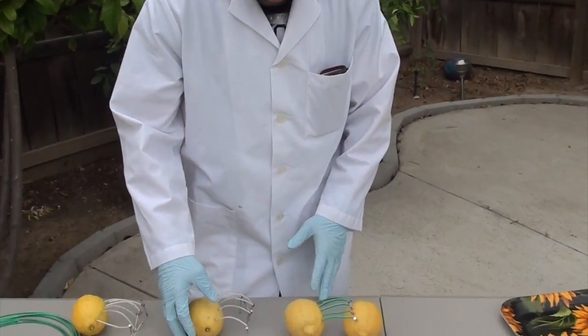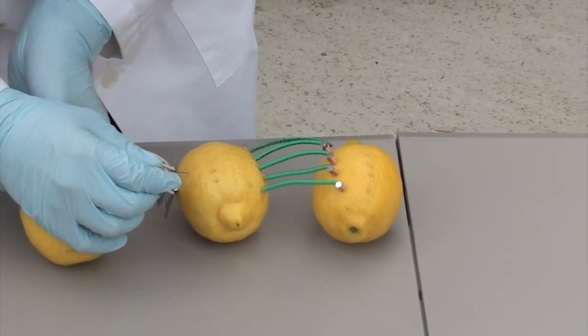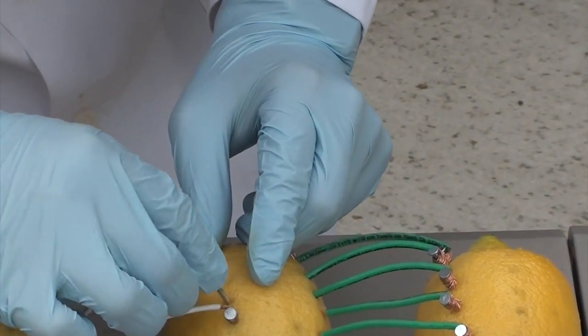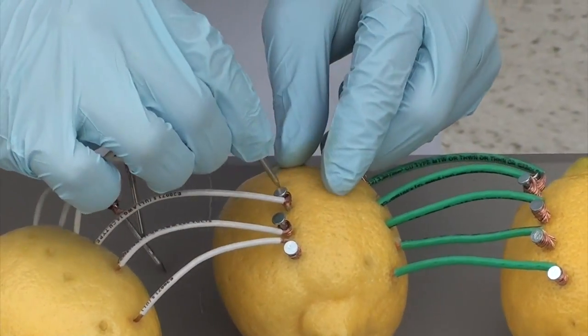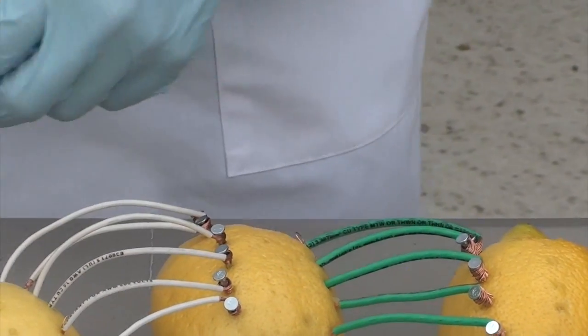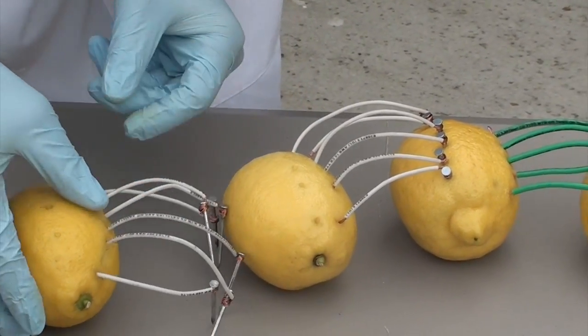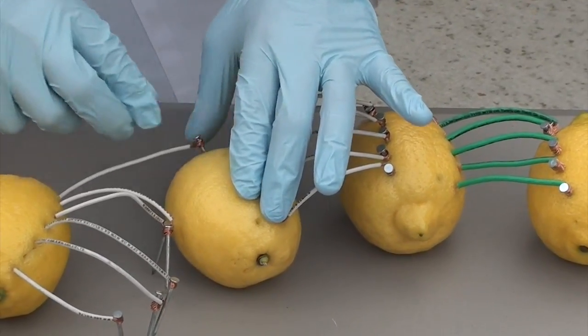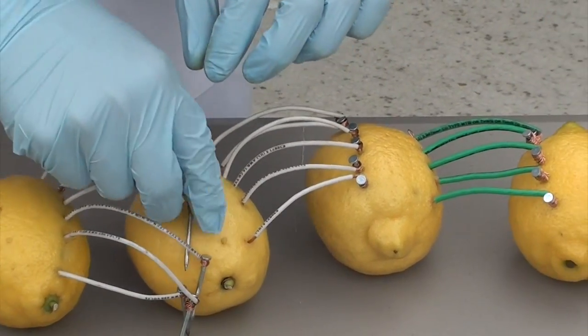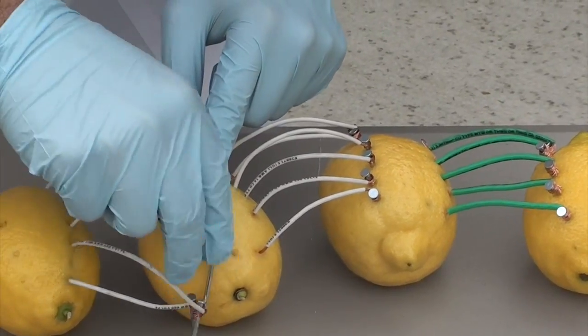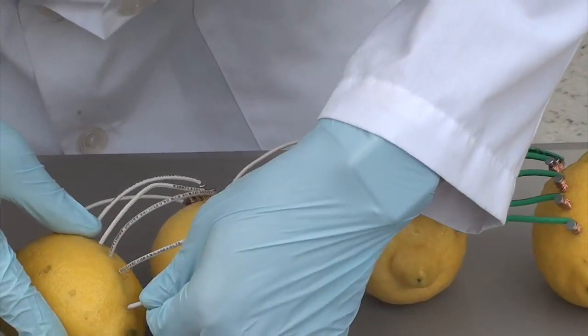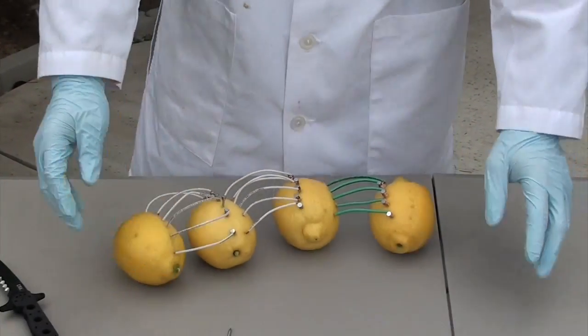We will repeat this process for two other lemons, connecting the zinc into the other lemon. We have already punctured all the lemons and we just connect them like that. Make sure all the nails are nice and tugged with your copper wire. And now all that is left is the positive and negative charges coming out the side.